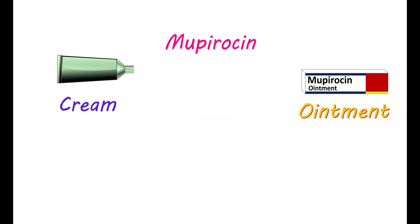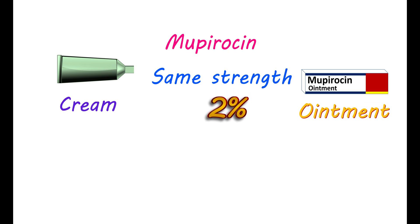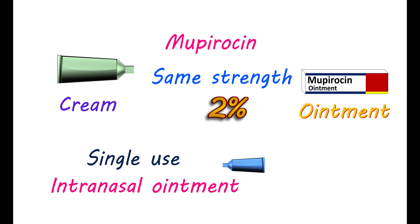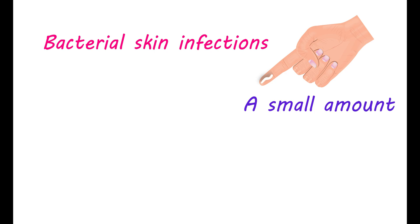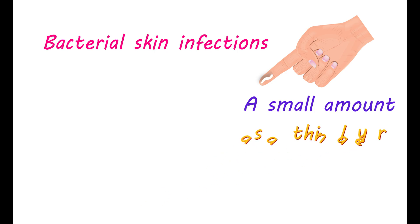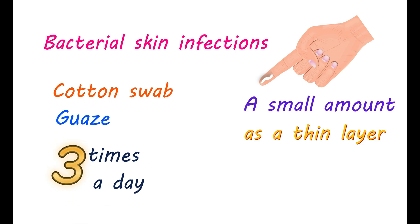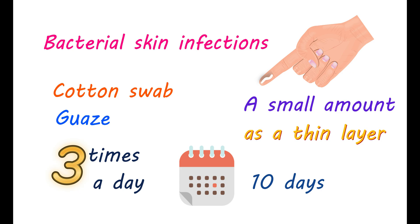How to use this medication: You can get Mupiracin either in the form of cream or ointment. Both formulations contain the same strength of medication at 2%. It is also available as a single-use intranasal ointment to remove bacterial colonization in the nose. For treating bacterial skin infections, you should apply a small amount of ointment at the affected area as a thin layer, using a cotton swab or gauze. You should apply it 3 times a day for up to 10 days. You can see an improvement at the infected site within 5 days. Wash your hands properly before and after use.